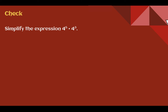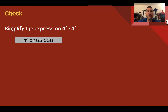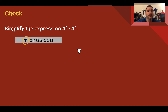Check your understanding: simplify the given expression. Pause the video now and complete the check. You should have said 4 to the eighth power, or if you multiply that out, 65,536. If you just leave your answers as a power, that will be fine unless it specifically asks you to multiply it out. The lower the numbers, the more likely you'll need to multiply it out — 4 to the eighth I would just leave. To get that, we have the same base, so add the exponents: 5 plus 3 is 8, so 4 to the eighth.